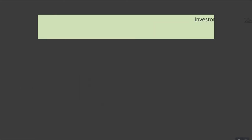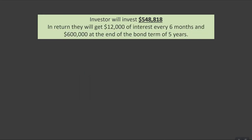Moving forward, the present value is $548,818 — that's actually what the investor is going to pay for the bond, not $600,000, because these bonds are sold at a discount. In return, they'll get $12,000 of interest every six months for five years. And at the end of the five-year investment, they'll get not $548,818 back but $600,000 — the maturity value. This is why when companies account for these bonds, they need to record a payable for the full $600,000, because that's what they're going to pay at the end of the day. The investor invests $548,818 and makes $720,000 on that return over the period of five years.